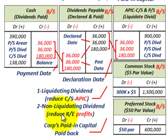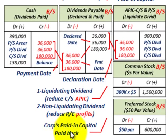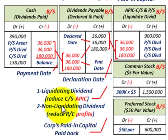With the liquidating dividend, we reduce our additional paid-in capital — that's the paid-in capital for the dividends paid — because we didn't have enough retained earnings, so we had to use the additional paid-in capital that the stockholders have. With the non-liquidating dividend, we reduced the retained earnings or profits because we had enough retained earnings to do that. In the case of the fully liquidating dividend, the corporation's paid-in capital is actually being paid back to the shareholders. Whereas with the non-liquidating, the profit that the company had in retained earnings was being paid back to the shareholders.